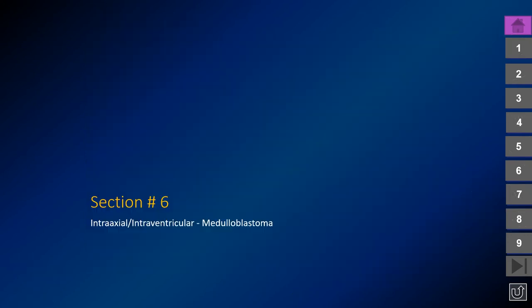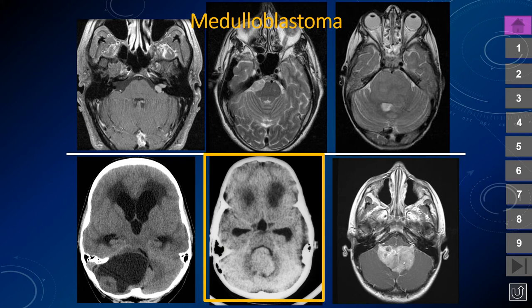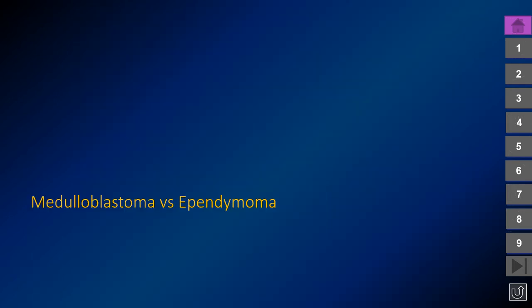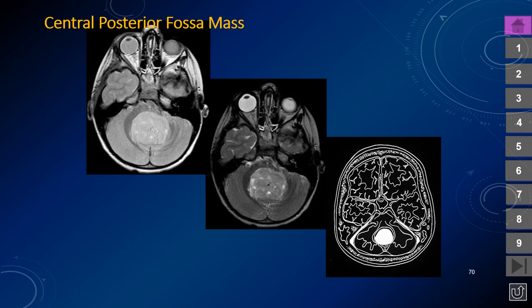Next we discuss medulloblastoma, an intraaxial intraventricular lesion. Medulloblastomas encompass several subtypes defined by molecular markers. They are composed of small, round cells or carrot-shaped cells with a high nuclear-to-cytoplasmic ratio. As small round blue cell tumors, they tend to have high attenuation on non-contrast CT, may show restricted diffusion, and may be relatively hypointense on FLAIR and T2-weighted MR. The primary differential for a posterior fossa ventricular lesion in a child is between medulloblastoma and ependymoma. Medulloblastomas tend to be rounded, centrally located masses.